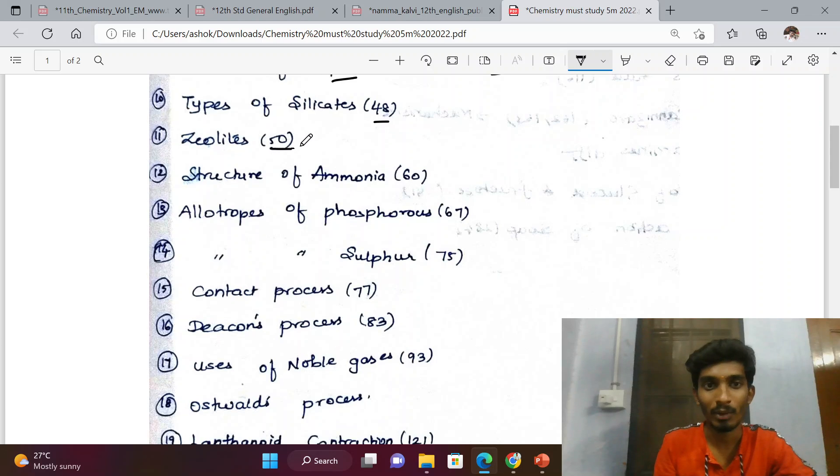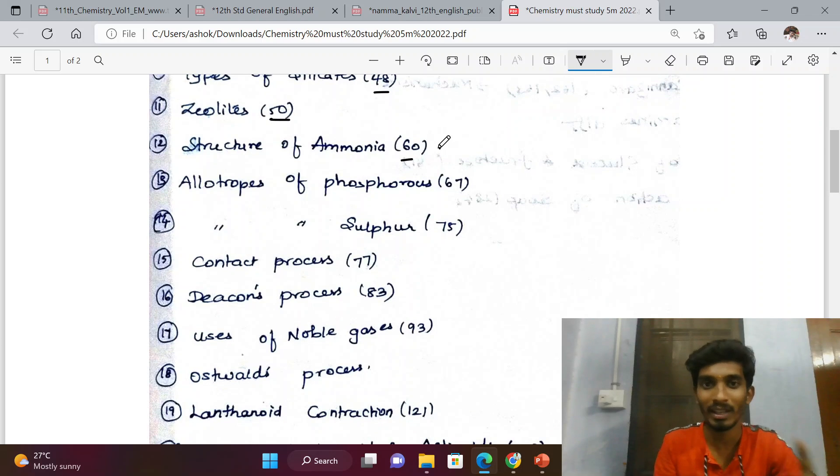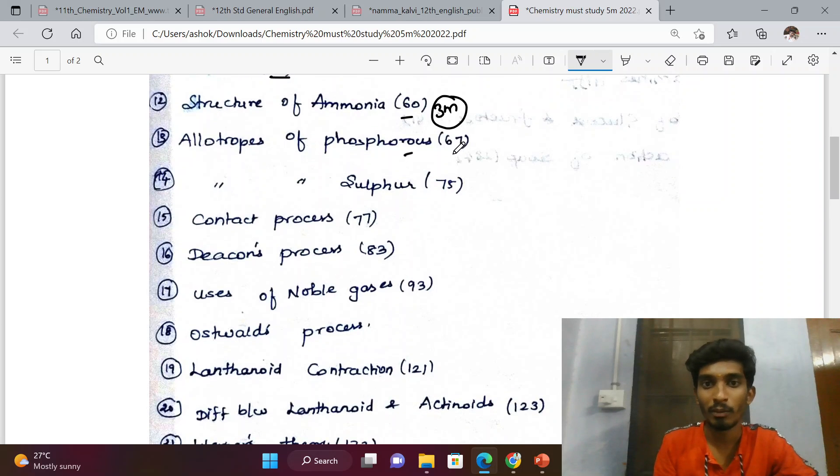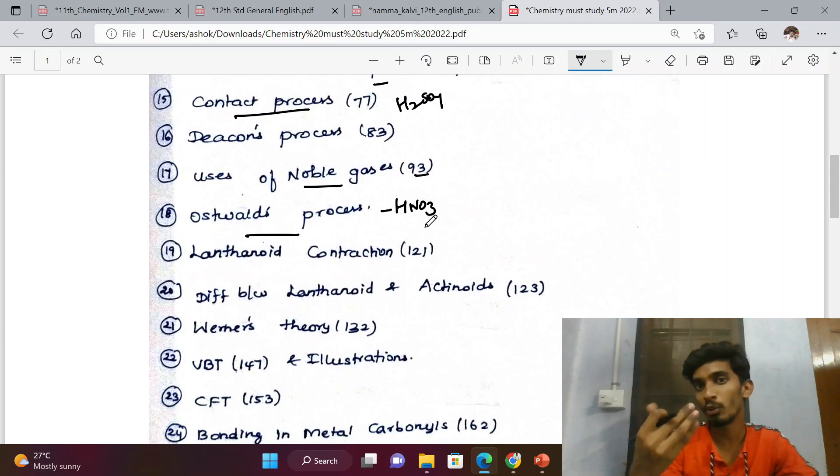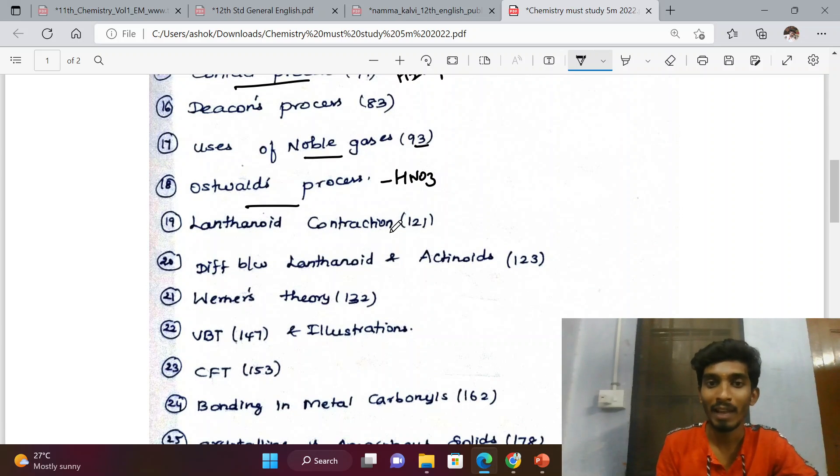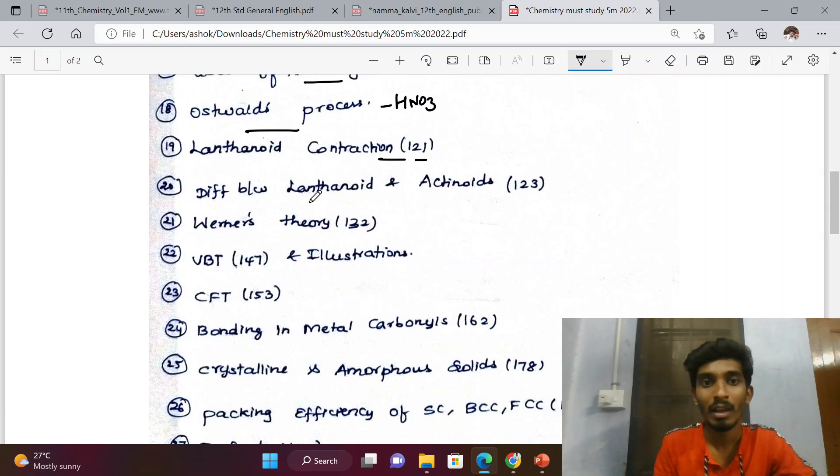Structure of ammonia - 5 marks but can be 3 marks. Allotropes of phosphorus, allotropes of sulfur, contact process for sulfuric acid preparation, Ostwald process for nitric acid preparation, uses of noble gases, lanthanide contraction - 2 marks or 5 marks.